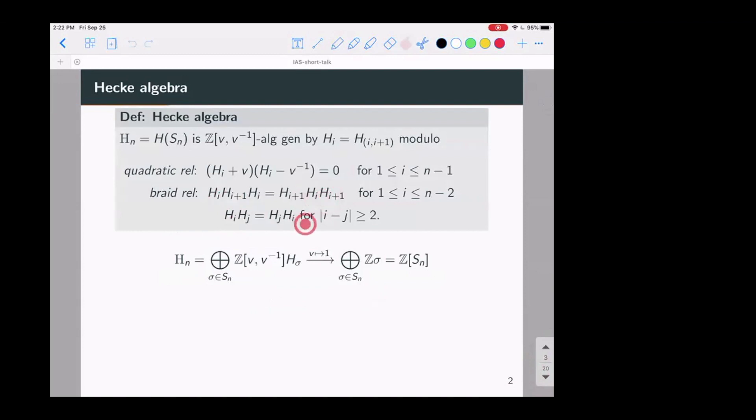In the case of a symmetric group, you still have the same braid equations on these generators Hi, but now you deform the Coxeter relation in this way. V is here an indeterminate. You see that if you put V is equal to one, then you recover the relation Hi squared is equal to the identity.